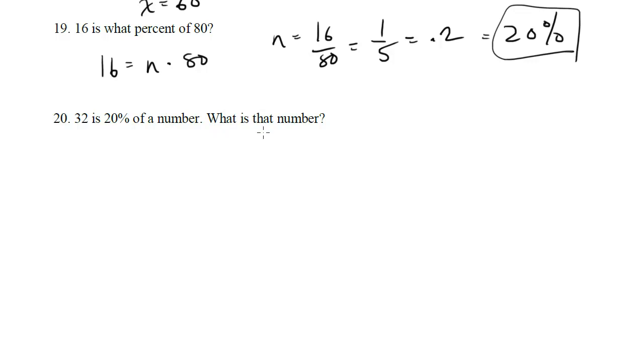Last one, 32 is 20% of a number, what is that number? Again, 32 equals 20%, 0.2, of times a number n. What is that number? Well, n is just going to be 32 divided by 0.2, which is 160, which is the answer to the question.